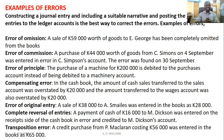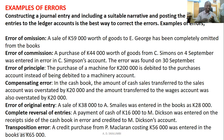Transposition error: you transpose the figures. For example, a credit purchase from P. McClellan costing 56,000 was entered in the books as 65,000 — the digits 5 and 6 are transposed. These are the errors found when working on accounting documents; however, they will not prevent the trial balance from balancing.